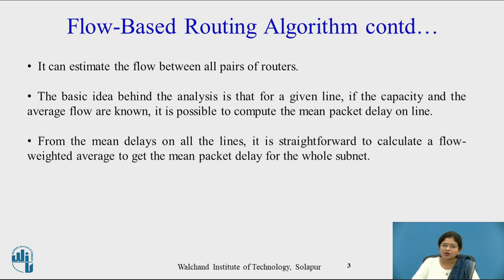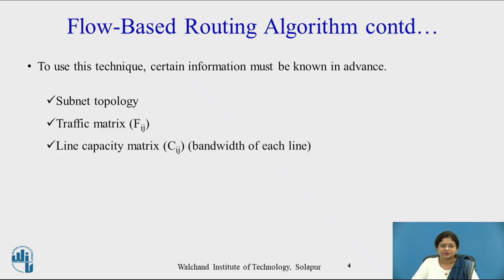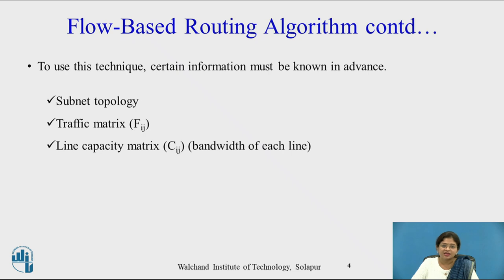So let us see how to calculate the mean packet delay. To use this technique, certain information must be known in advance. There are three important pieces of information: first, the subnet topology; second, the traffic matrix, represented by Fij, where I is the source and J is the destination; and third, the line capacity matrix, represented as Cij. This line capacity is nothing but the bandwidth of each line.